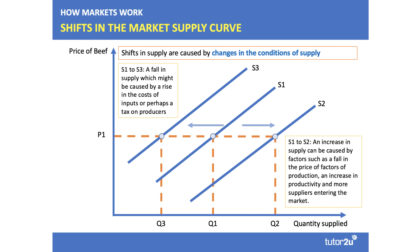It's vital to use language and terminology appropriately. A change in the price of a product — in this case beef — leads to an extension or contraction along the supply curve; in other words, a change in the price leads to a change in the quantity supplied. Any change in a non-price factor leads to a shift in supply at each and every price — the supply curve changes position.